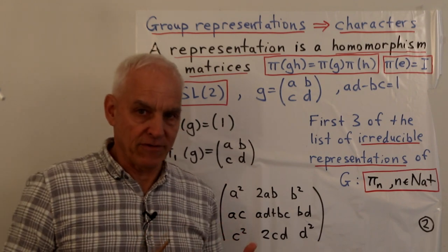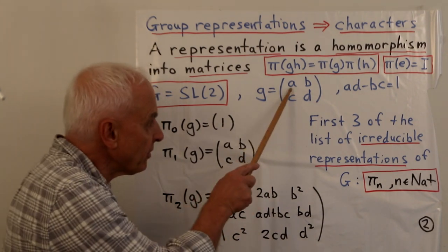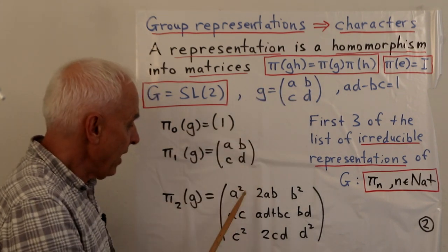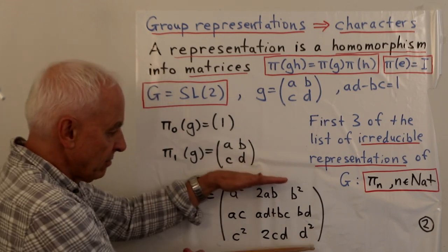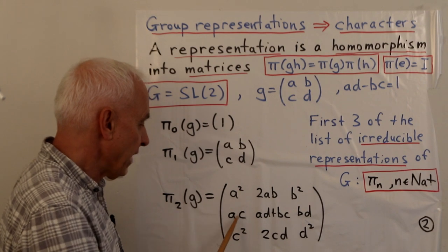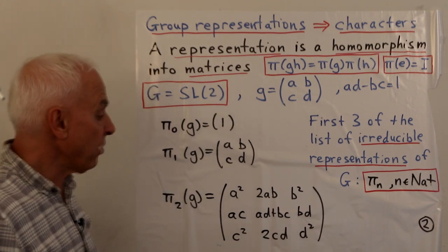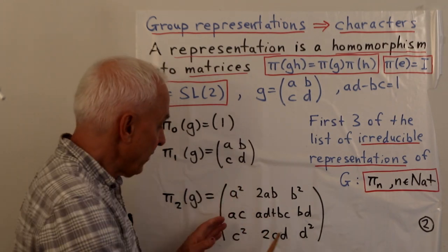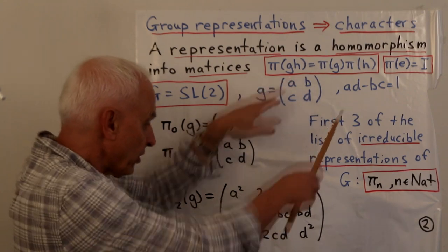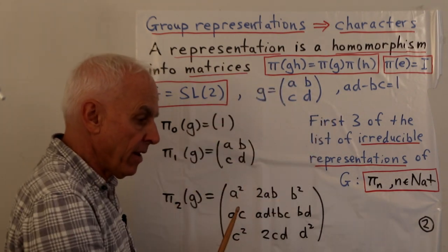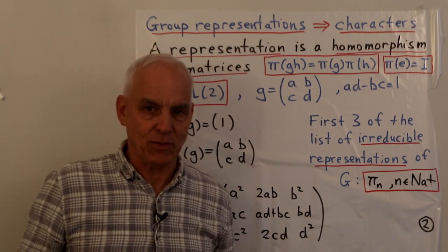Now the first non-trivial one: π₂(G) is a three-by-three matrix. Starting from ABCD, we send it to the matrix with entries A², 2AB, B² on the top row; AC, AD+BC, BD in the middle; C², 2CD, D² on the bottom. These are all binomial-type expansions. The curious central element is AD + BC. It's a great exercise to check that this satisfies the homomorphism property: that the product of the three-by-three matrices corresponds to the product of the two-by-two matrices you started with.